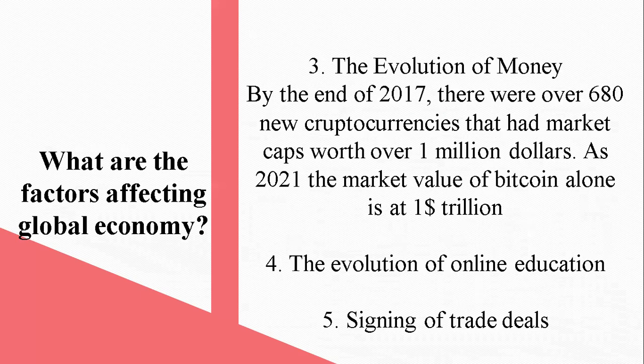The evolution of money has also greatly contributed to the growth of the global economy. For example, cryptocurrency: in 2017, research says there were over 680 new cryptocurrencies that had market caps of over $1 million. But just in 2021, Bitcoin alone already had a market cap of $1 trillion. The movement of money as a result of cryptocurrencies is much faster, much speedier, and much more efficient than it was 5, 10, or 15 years ago.